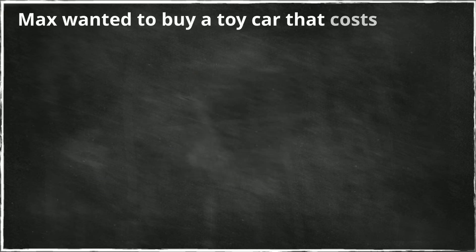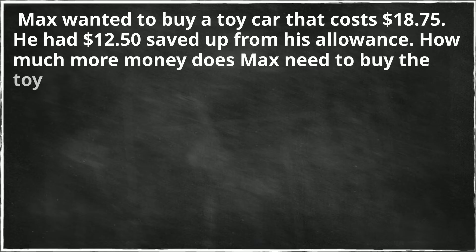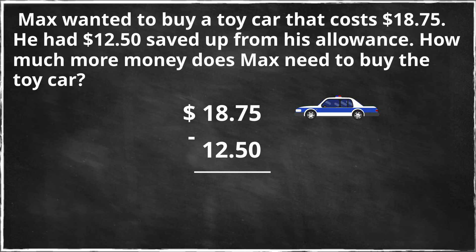Number three. Max wanted to buy a toy car that costs $18.75. He had $12.50 saved up from his allowance. How much more money does Max need to buy the toy car? He needs a grand total of $18.75 and he has $12.50. So if you take $18.75 minus $12.50, that's the difference he needs to come up with. When you subtract that, it is $6.25.